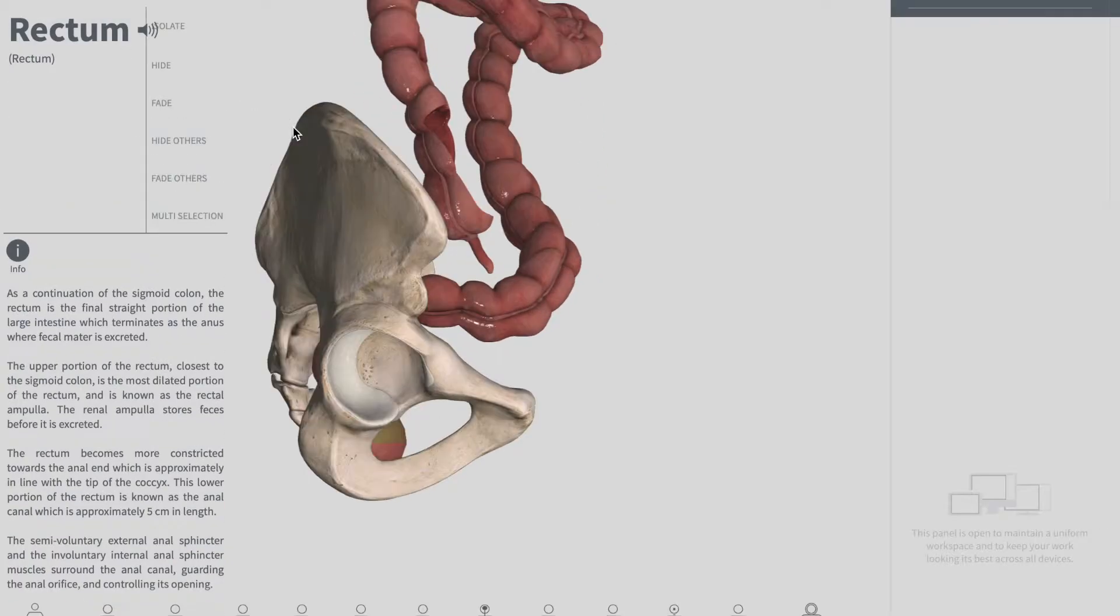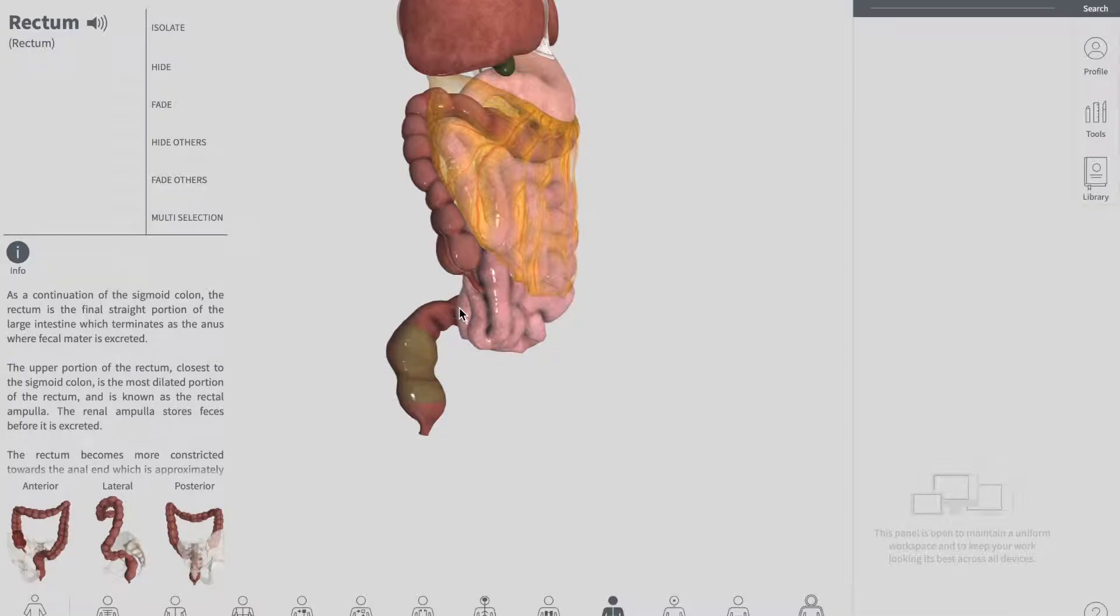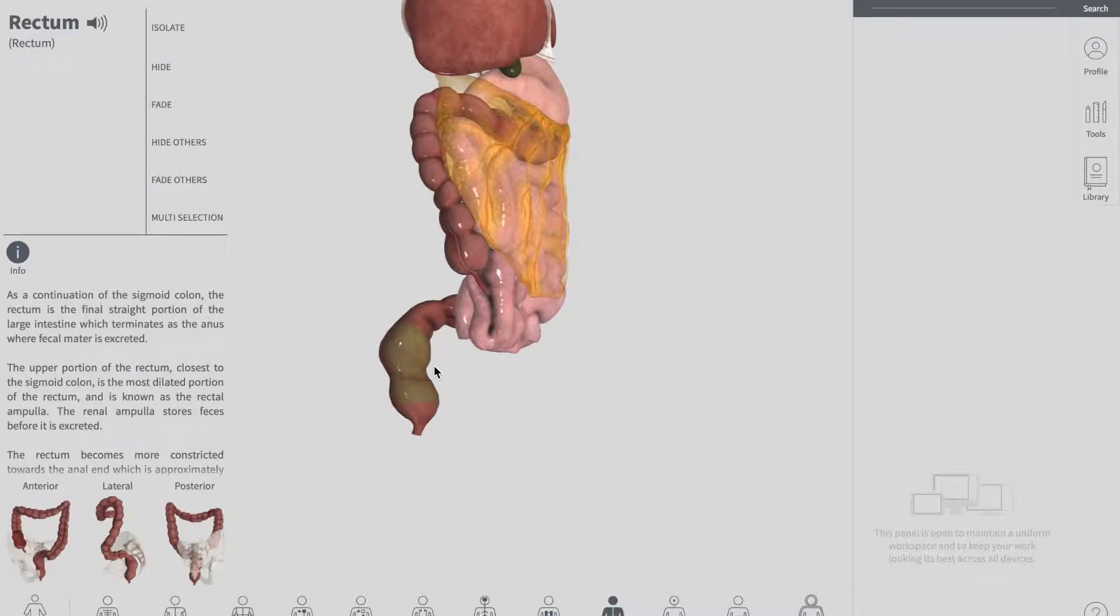The anorectal flexor is actually an anterior-posterior curve with convexity. So this flexor, which is called the anorectal flexor, is formed by the tone of a muscle which we call the puborectalis muscle. Let me show you the puborectalis muscle and how it is forming the flexor.